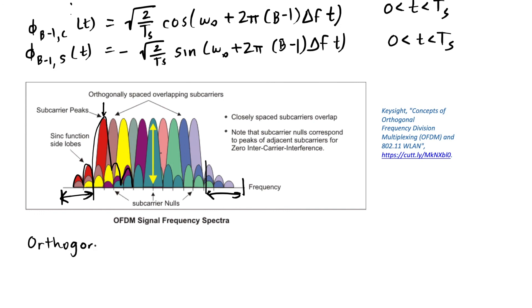To get that orthogonality, we need to use delta f equal to 1 over Ts. That is, our symbol frequency is going to be the same as our delta f here. So our frequency spacing is 1 over Ts.